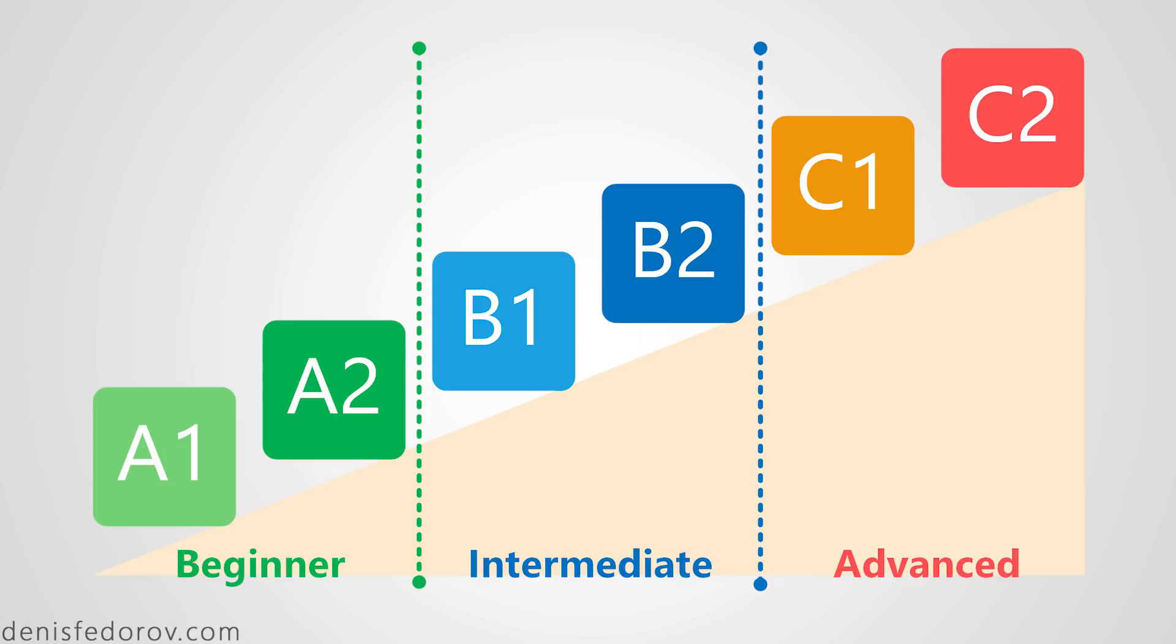Okay B1 is a level of lower borderline of a good proficiency in Russian. The upper limit will be C1 in my opinion. C1 is another realistic limit because C2 is a level equivalent or at least almost equivalent to an educated native speaker with an emphasis on the word educated.